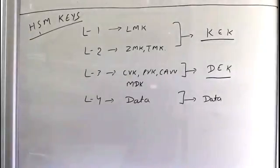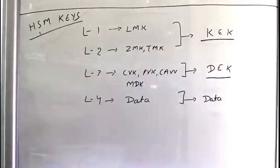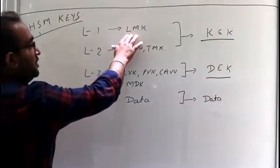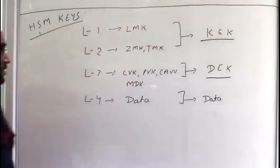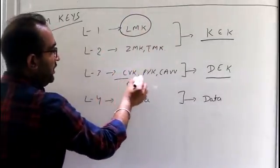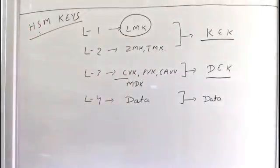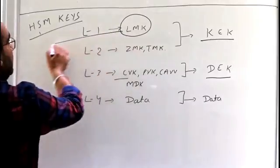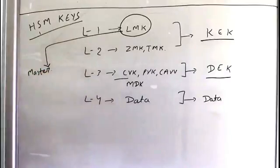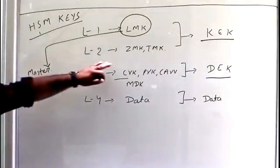KEK, as the name implies, is the key which is used to encrypt other keys. For example, LMK is the main master key of any HSM. Under this LMK, all other keys — whether CVK, PVK, CAVV, ZLK, TMK, or any key — are stored under the LMK. So LMK is the master key of any HSM.